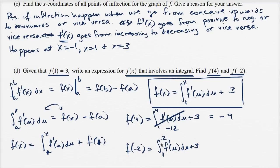Well, it feels a little strange to have the upper bound being lower than the lower bound. So we can swap the bounds and then add a negative out here. So this is going to be equal to the negative of, if we swap the bounds here, from negative two to one, f prime of u du plus three.